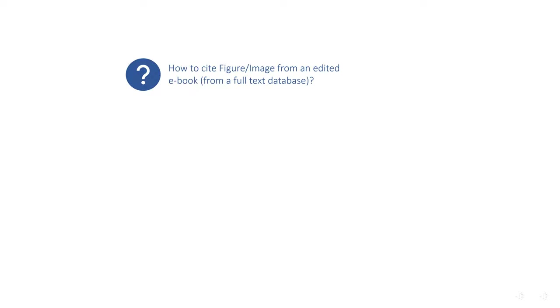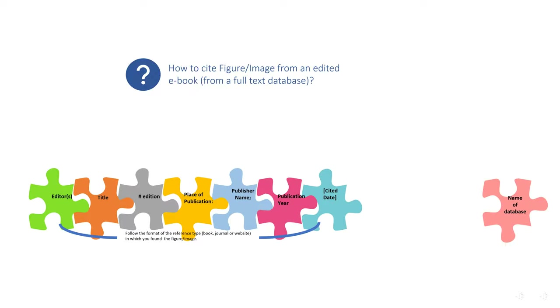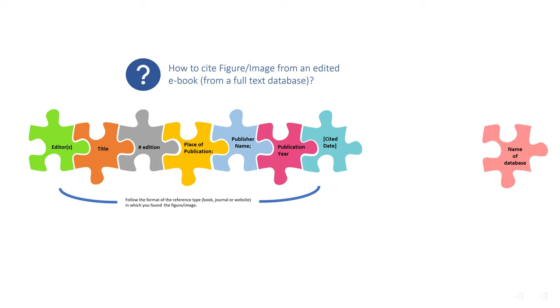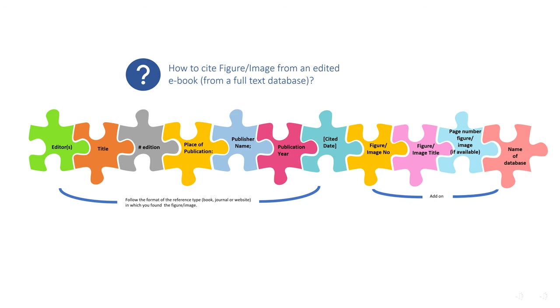To cite this selected figure, refer to the images format in Vancouver referencing style. Follow the format of the e-book in which you found the figure up to the cited date, followed by the number, title, and page number of the figure from the original source.